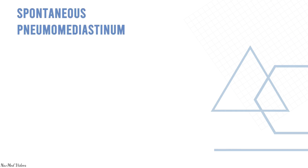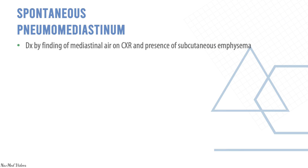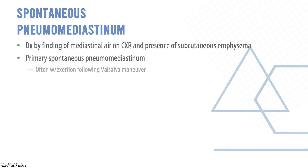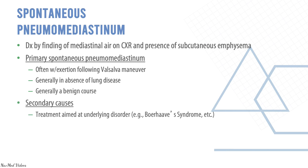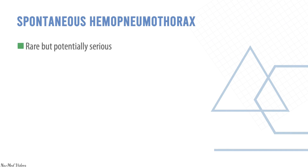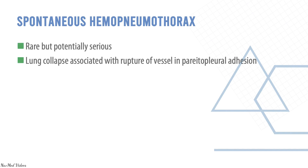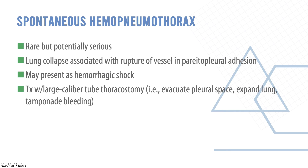Spontaneous pneumomediastinum is differentiated by finding mediastinal air on chest X-ray and the presence of subcutaneous emphysema. Primary spontaneous pneumomediastinum is often associated with exertion or a Valsalva maneuver, generally in the absence of lung disease, and is generally a benign cause. Secondary causes require treatment aimed at the underlying disorder — for example, Boerhaave syndrome. Spontaneous hemopneumothorax is rare but potentially serious; lung collapse associated with rupture of a vessel in a pleuropleural adhesion may present as hemorrhagic shock, and treatment is large-caliber tube thoracostomy.